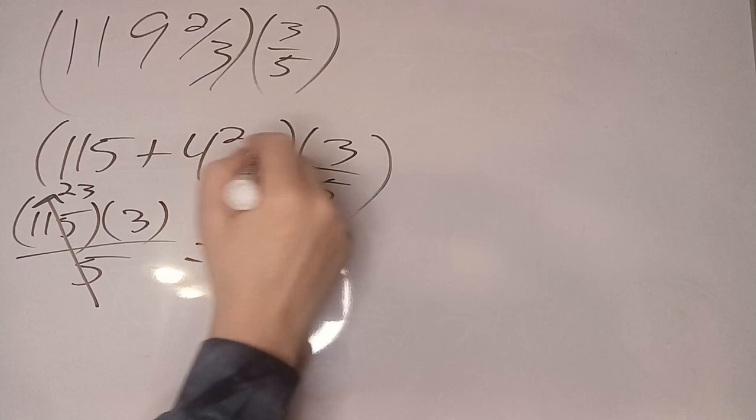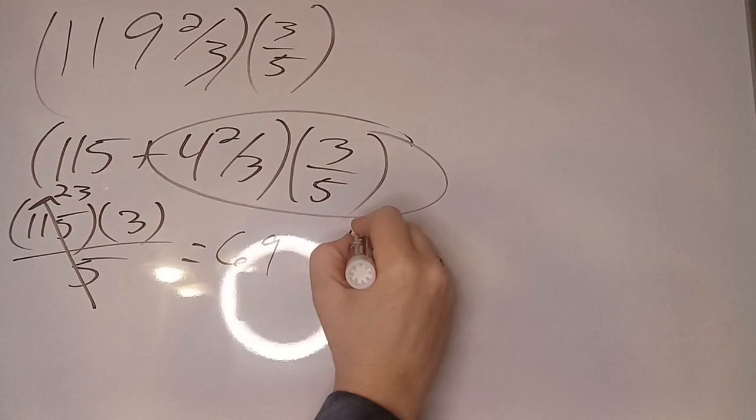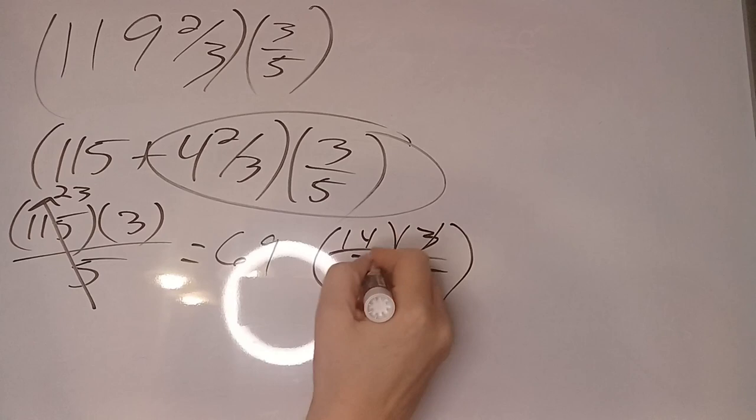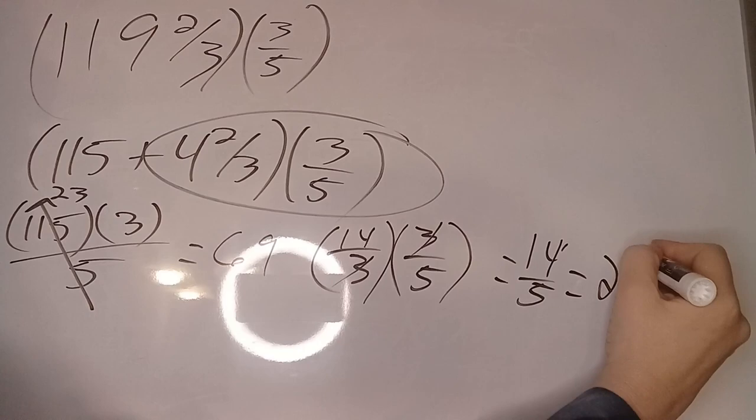Now let's look at the fraction part. 4 times 3 is 12 plus 2 is 14. So we have 14/3 times 3/5. Well we can cancel the 3's which gives us 14/5 which is 2 and 4/5.